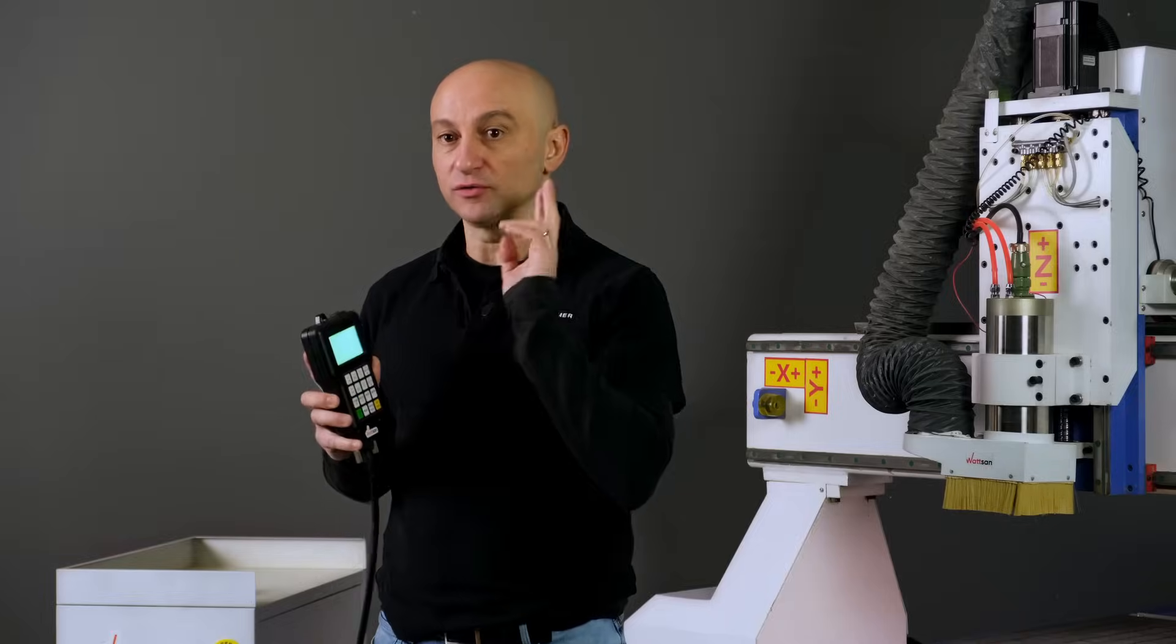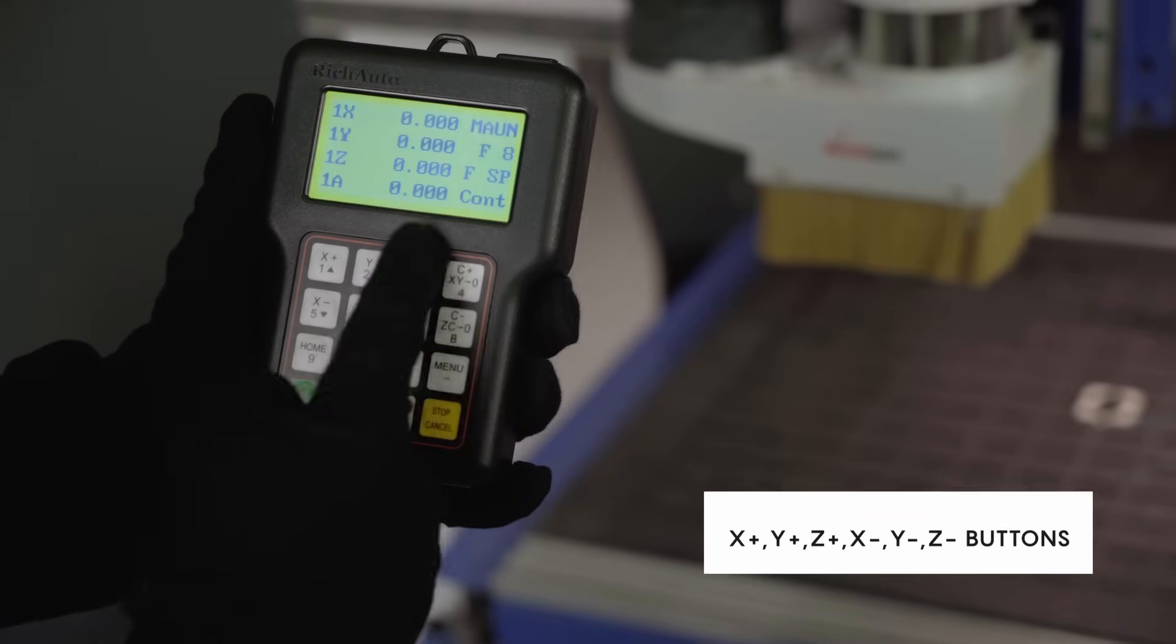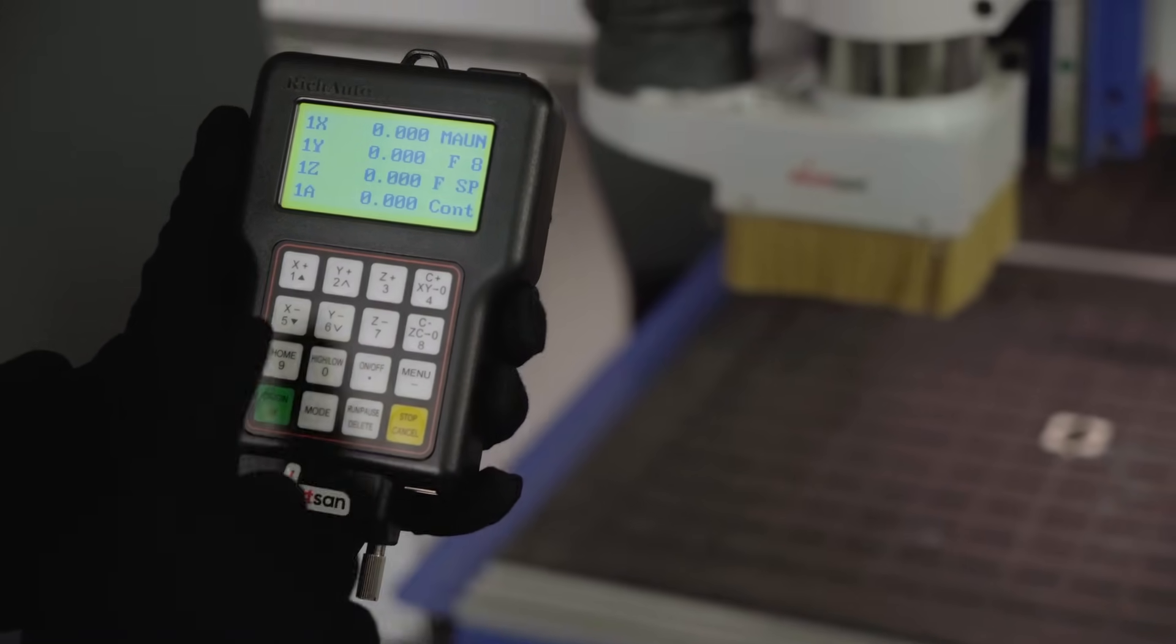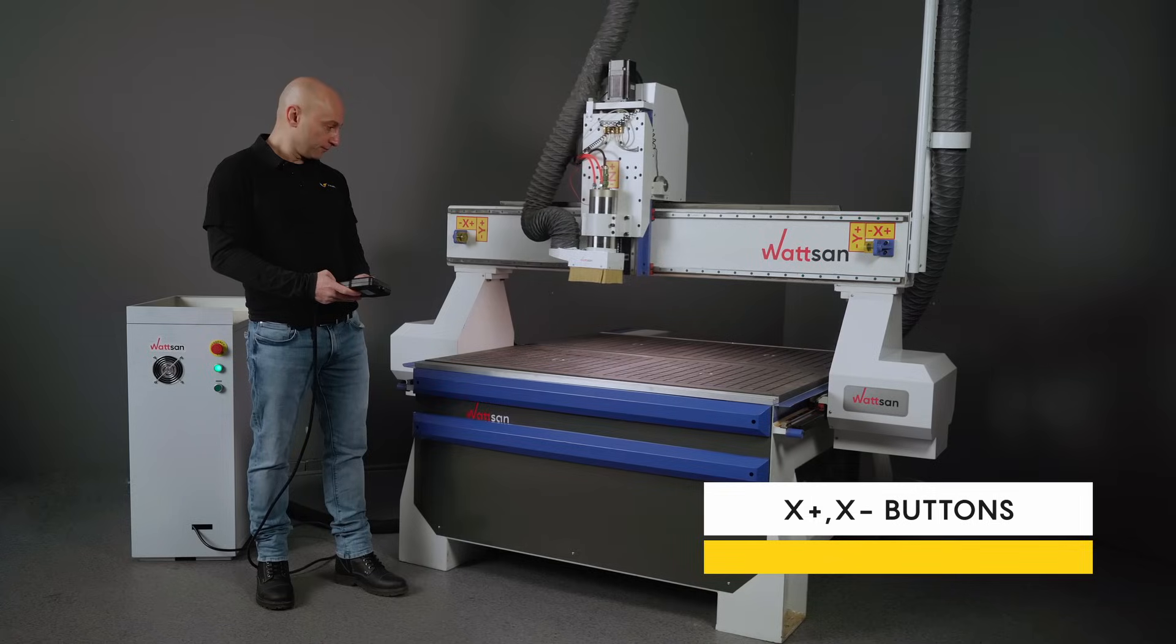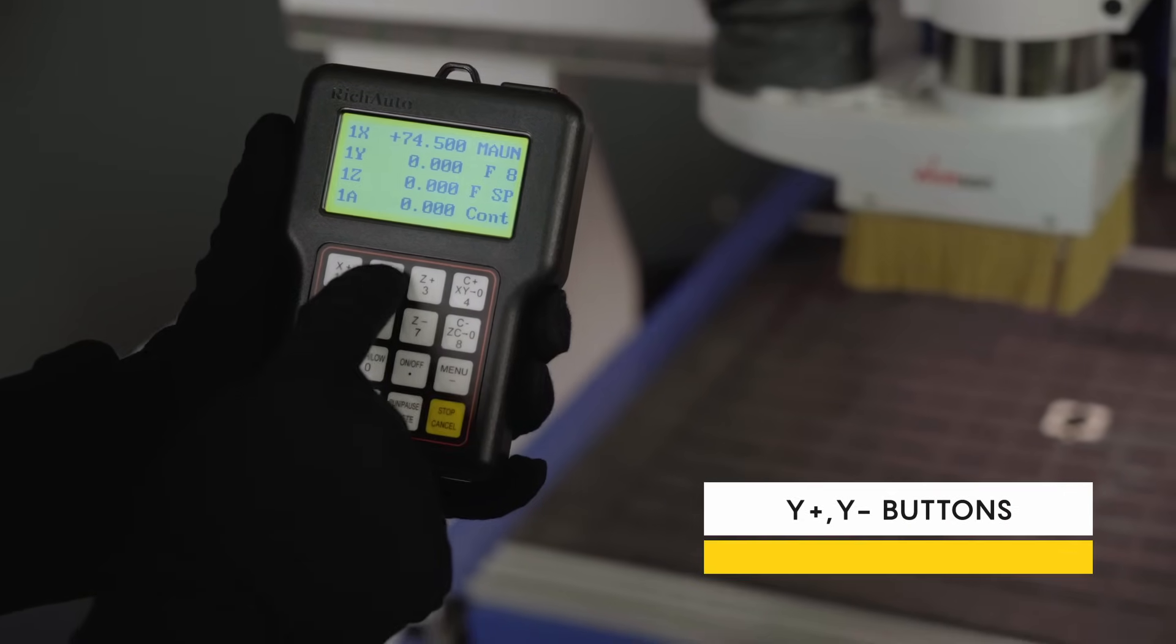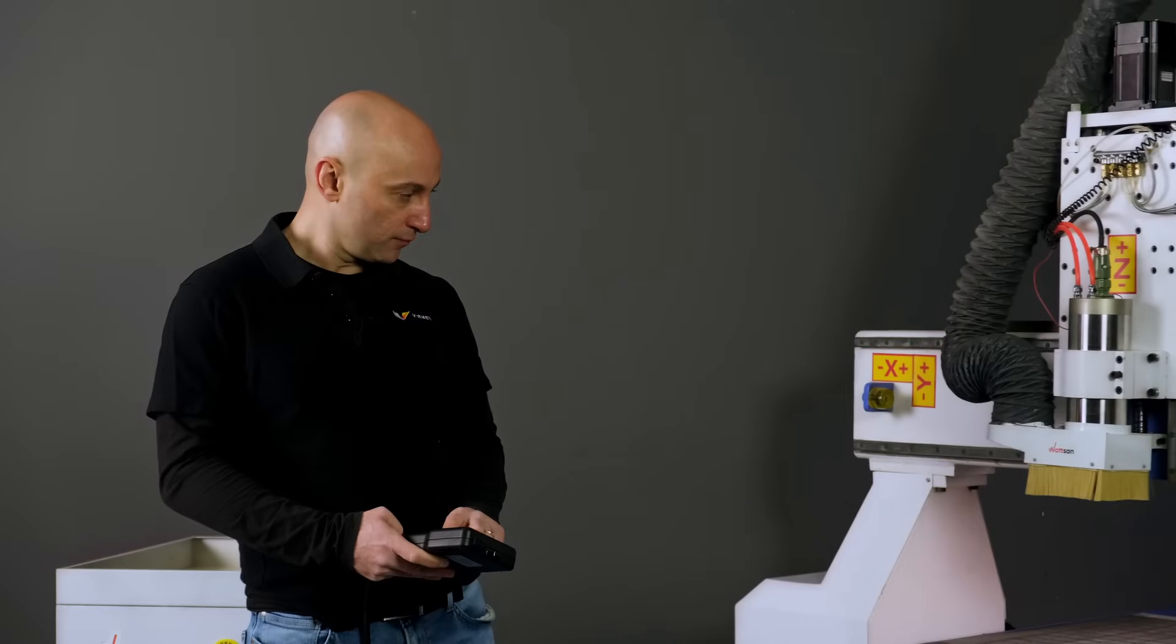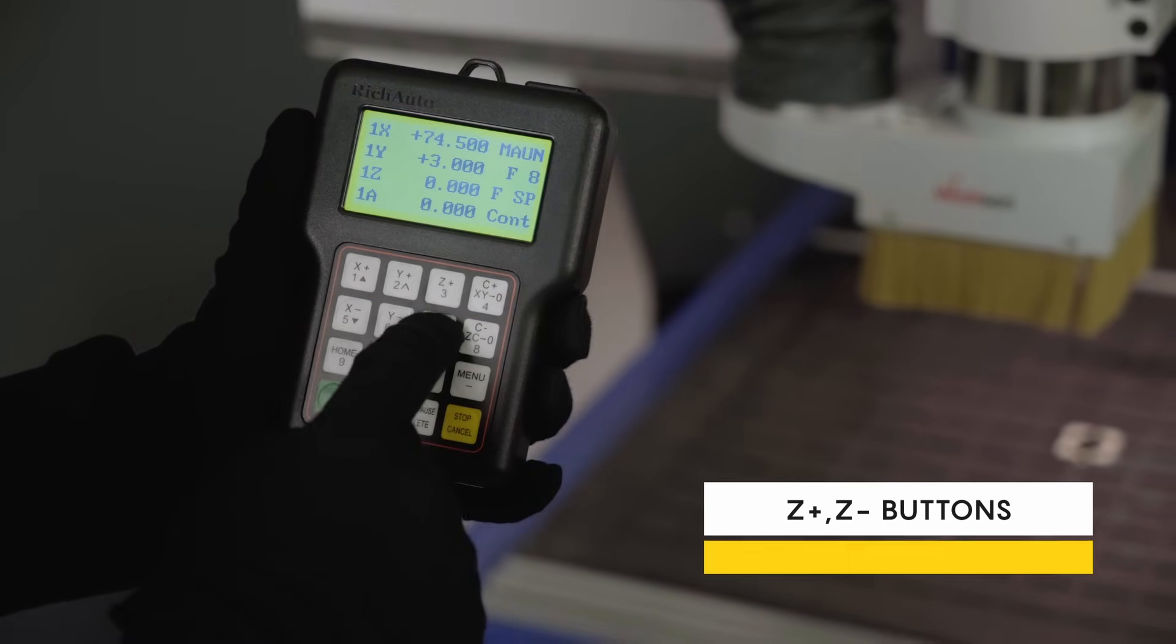Firstly, let's go through the functions of each of those. When pressed, these six buttons are used for the movement of the axis: these two for the X axis, these two for the Y axis, and these two for the Z axis.